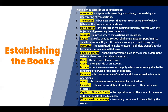8. Debit — the left side of an account. 9. Credit — the right side of an account. 10. Income — the increases in owner's equity which are normally due to the rendering of service or the sale of products. 11. Expenses — decreases in owner's equity which are normally due to its operation. 12. Assets — the money or property owned by the business. 13. Liabilities — obligations or debts of the business to other parties or creditors. 14. Capital or owner's equity — the share of the owner in the net assets of the business. 15. Withdrawals or drawings — temporary decreases in the capital by the owner.